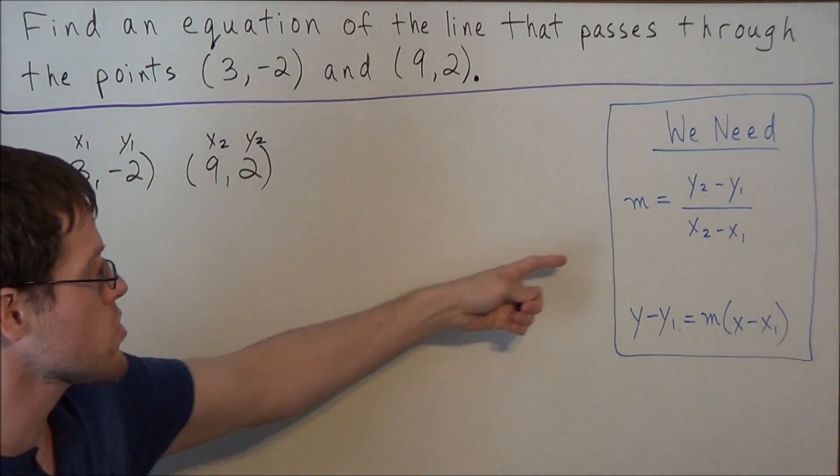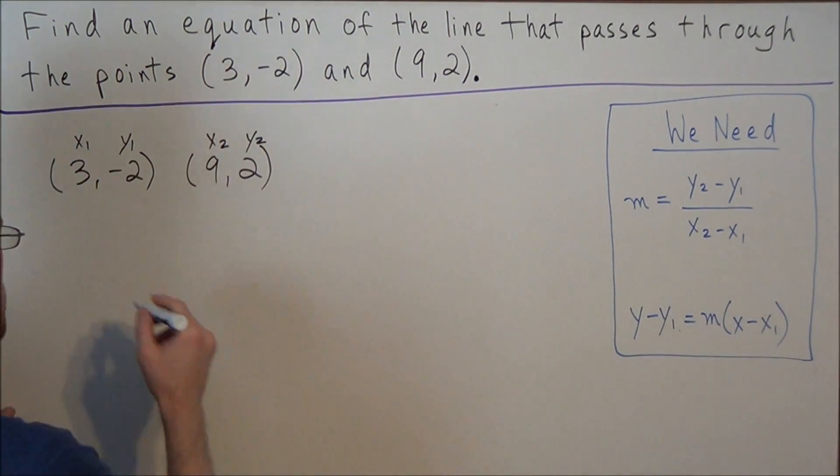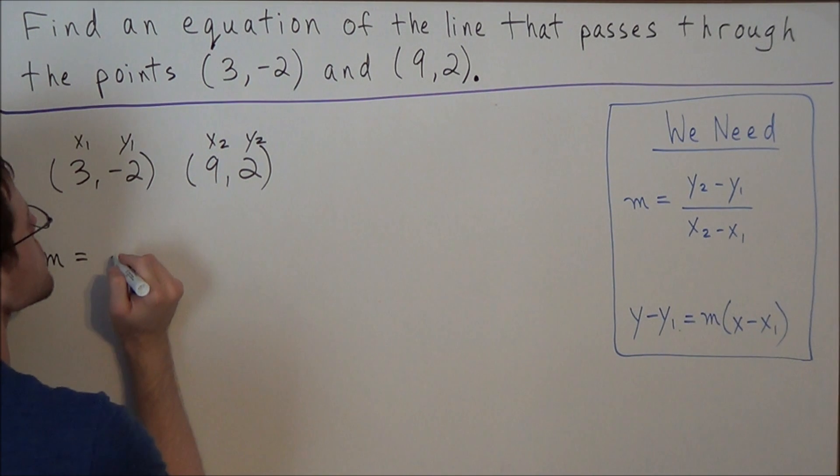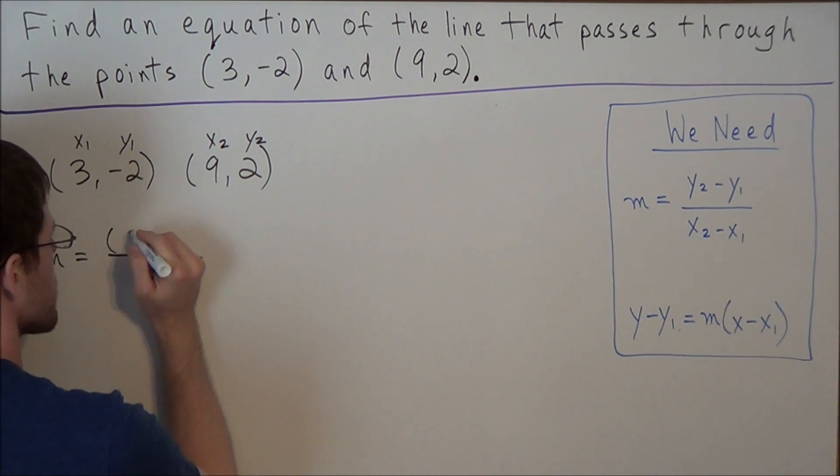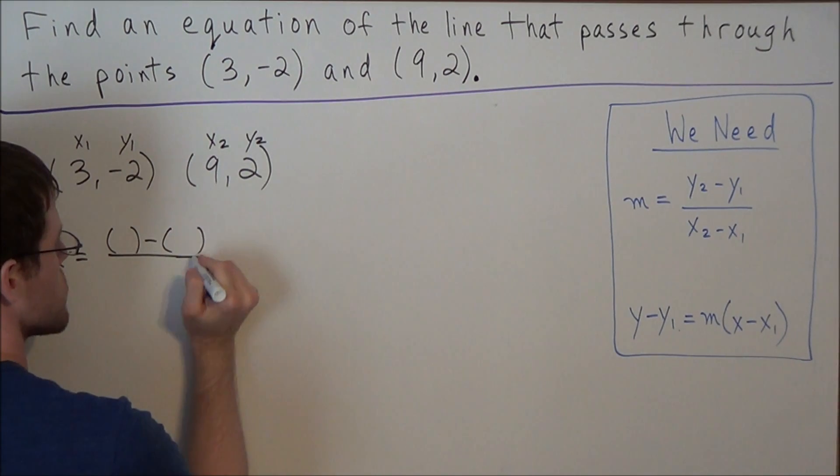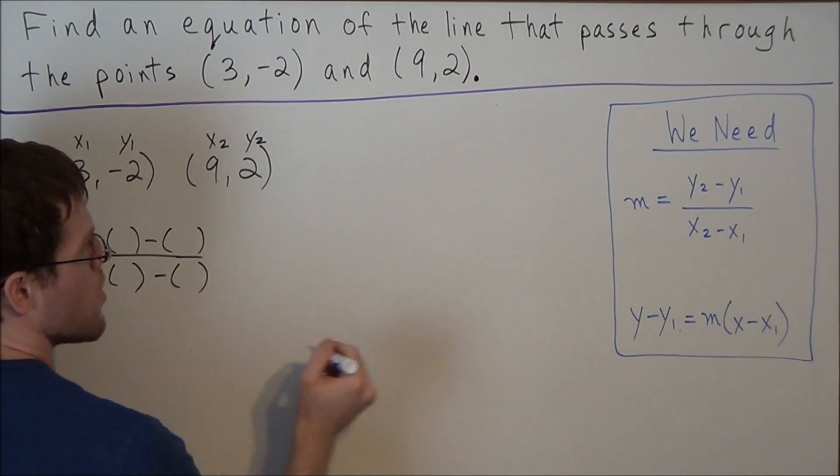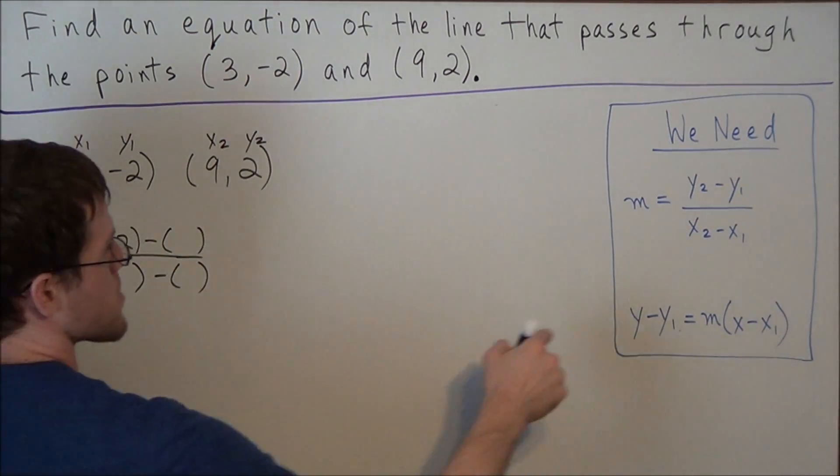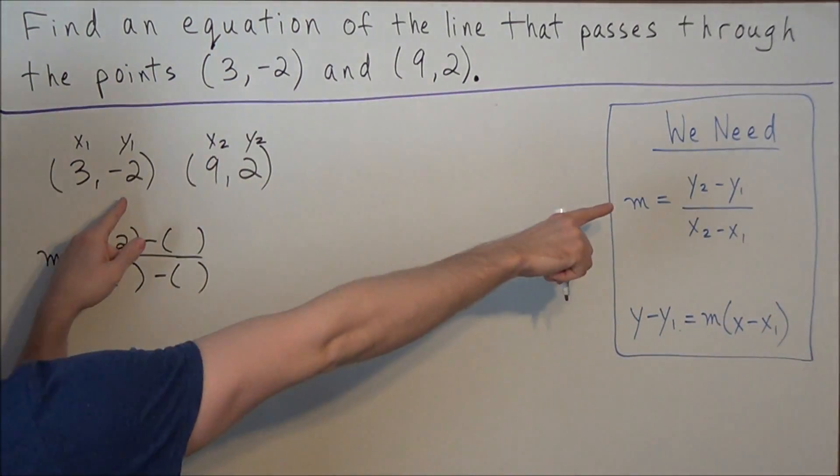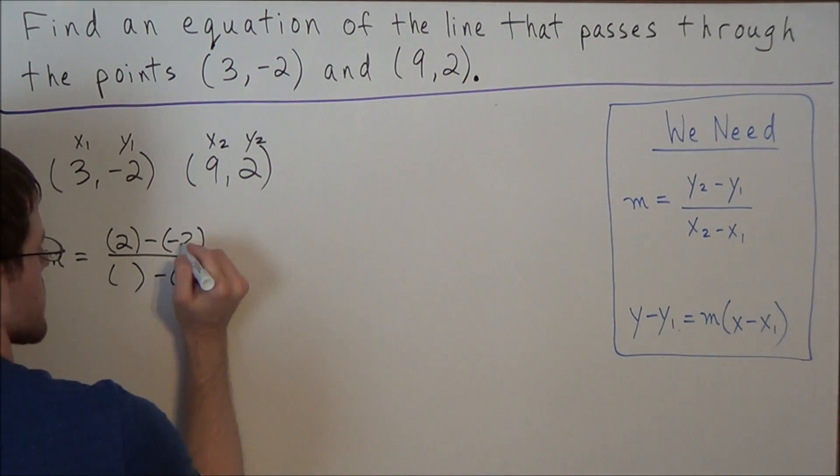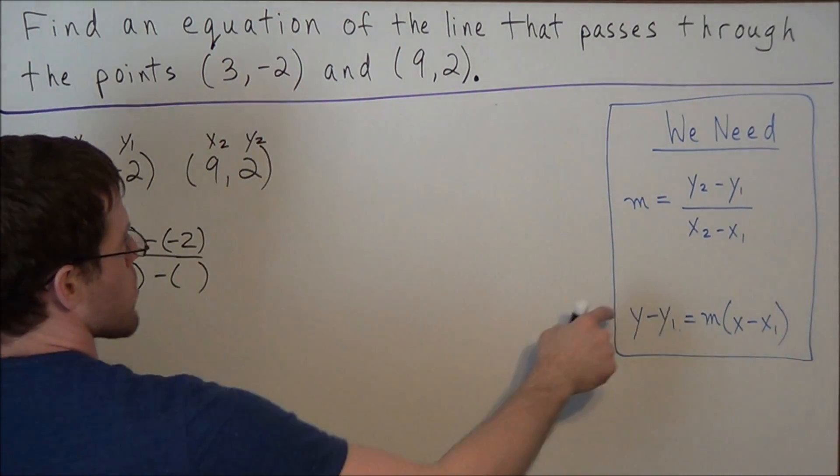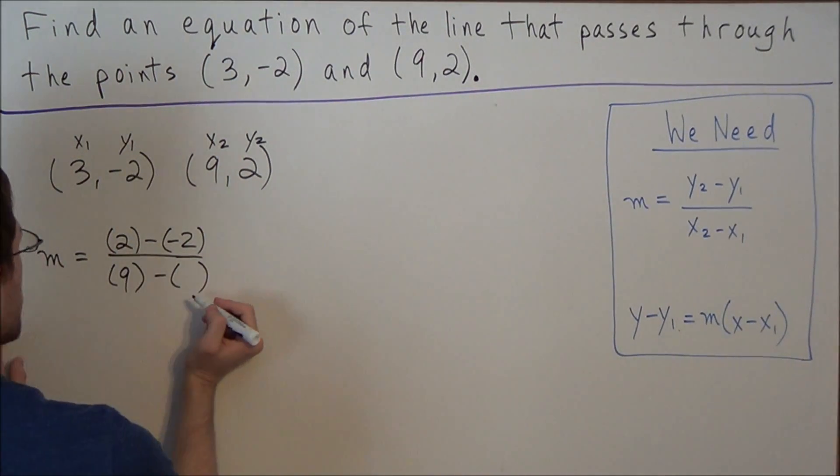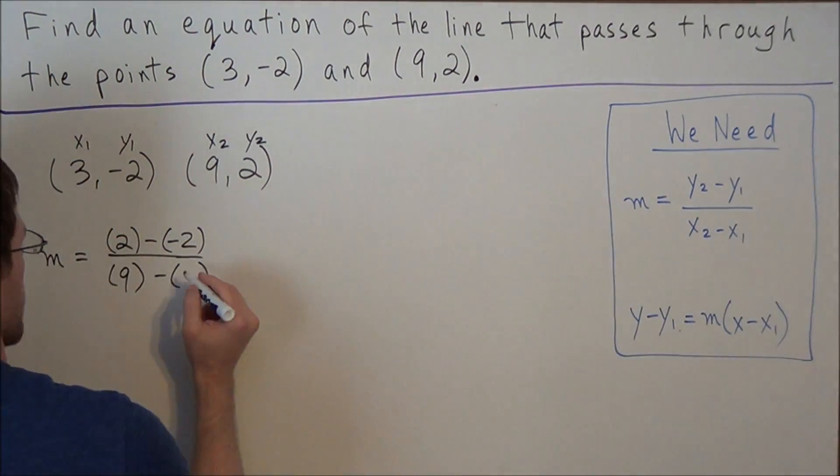So now to find the slope between these two points, we could use the equation for slope. We have m equals y2 minus y1 over x2 minus x1. So what we could do is we could make a direct substitution right into the equation for slope. So we're looking at y2, which in this case is positive 2, minus y1. And our y1 is negative 2. So we have 2 minus negative 2 over, and we're looking at x2, which in our case is 9, minus x1, which in our case is positive 3.